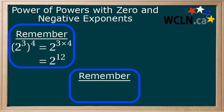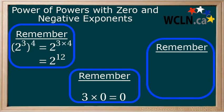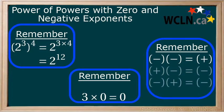Remember, anything multiplied by zero equals zero — 3 multiplied by zero equals zero. Finally, there are two points to remember when multiplying negative numbers together. Two negative numbers multiplied together equals a positive number. One negative number and one positive number multiplied together equals a negative number.